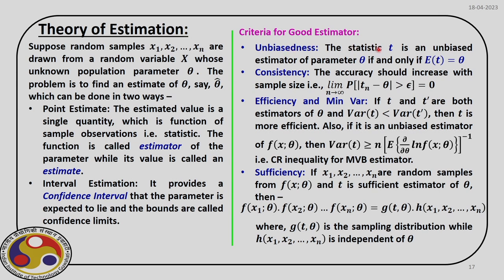If we have a statistic t obtained from the sample observations as an estimator for parameter theta, and if the expected value of t is equal to theta, then only we call it an unbiased estimator of theta. If the expected value of t is not equal to theta, it is a biased estimator, and the difference between the two is not called error — we call it bias.